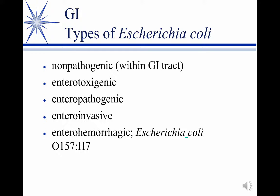E. coli — we now recognize at least five types of E. coli that cause problems. Actually, the first one is not a problem: the non-pathogenic E. coli within the GI tract. Now, if you take those and infect soft tissue, yes, they are pathogens, but within the GI tract they're not. Then we have the other four types: the enterotoxigenic, enteropathogenic, enteroinvasive, and the enterohemorrhagic, which is E. coli O157:H7.